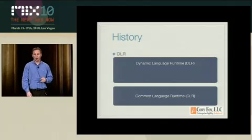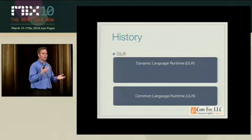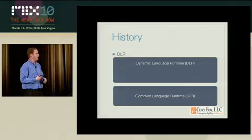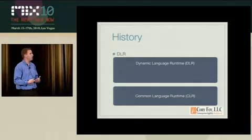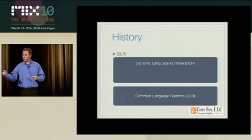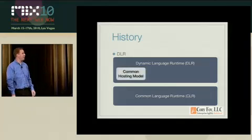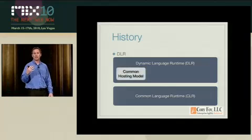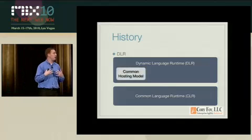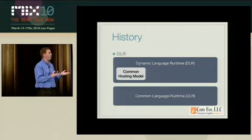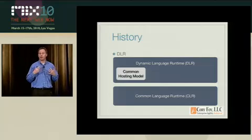So what is the DLR — this mythical creature that enables all these wonderful things? The DLR is a set of runtime libraries that sits on top of the CLR, and it consists of three modules. The first is the common hosting model, which allows you to run dynamic code inside of your C# modules. So if you want to host a dynamic language as part of C# or VB.NET, you're using the common hosting model.